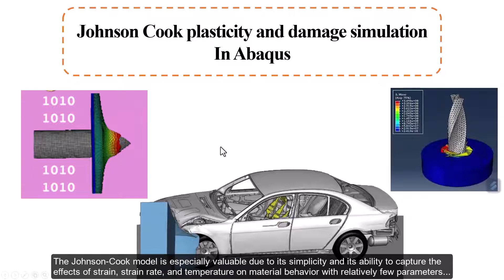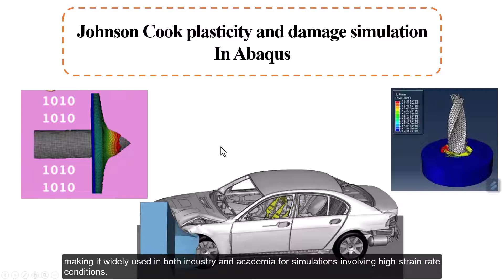The Johnson-Cook model is especially valuable due to its simplicity and its ability to capture the effects of strain, strain rate, and temperature on material behavior with relatively few parameters, making it widely used in both industry and academia for simulations involving high strain rate conditions.